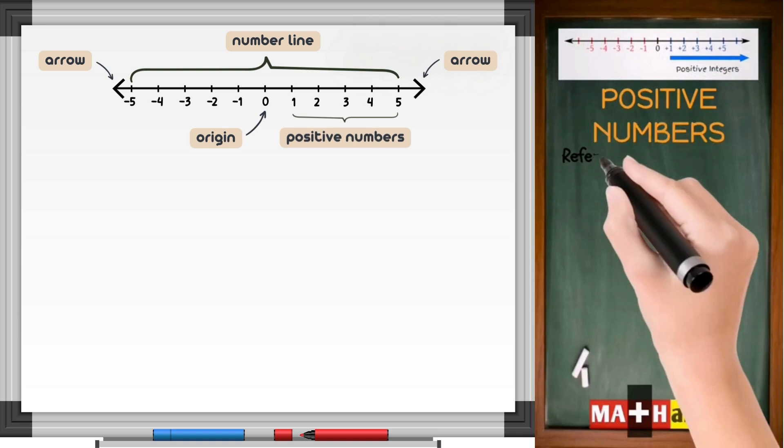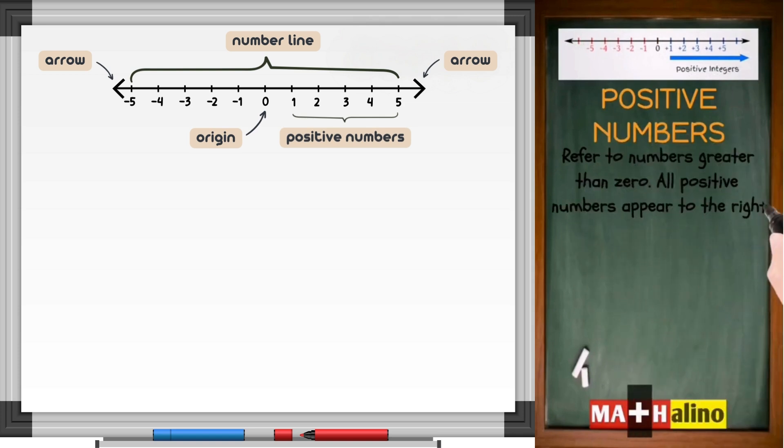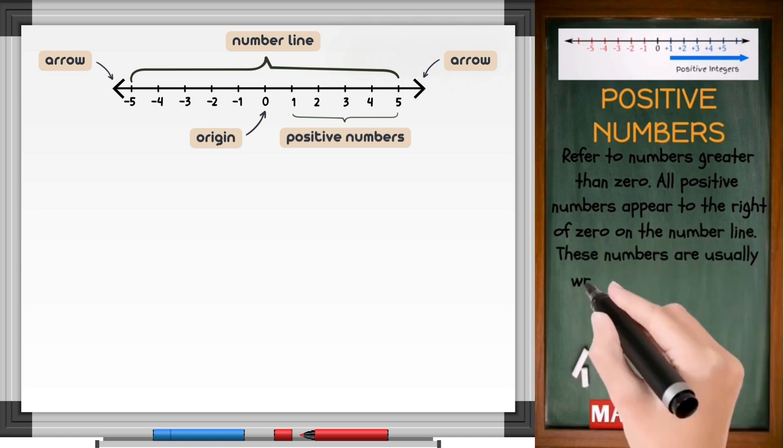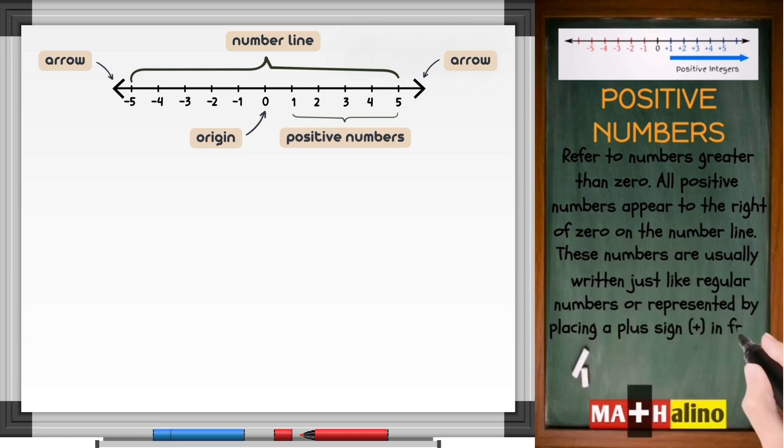Positive numbers. Refer to numbers greater than zero. All positive numbers appear to the right of zero on the number line. These numbers are usually written just like regular numbers or represented by placing a plus sign in front of the number.